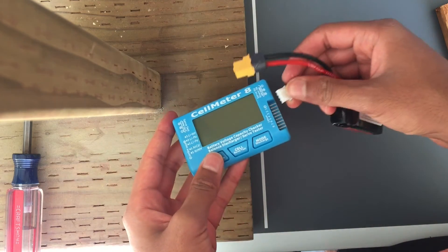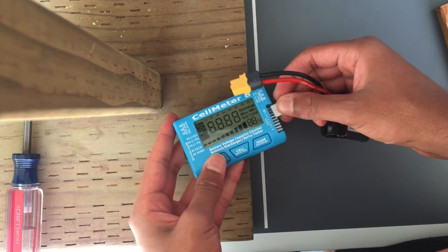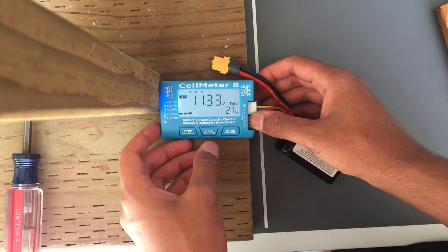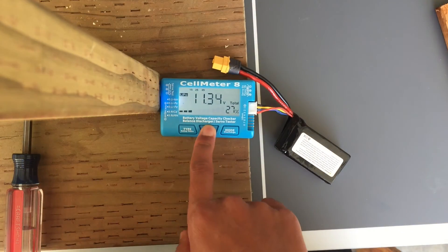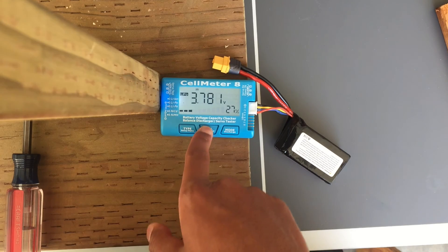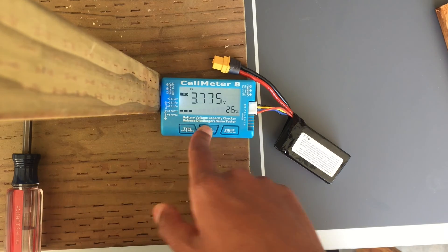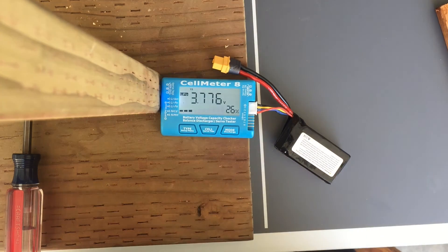I'm just going to test out the battery now. You can see it's completely discharged and each cell is about 3.7 volts. Each cell is very close to each other, so it's pretty well balanced.